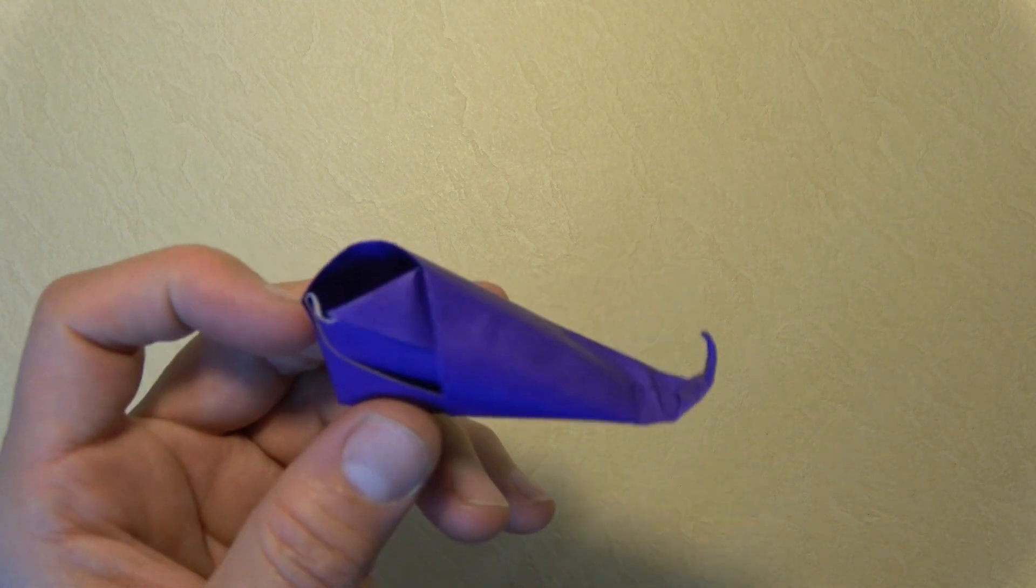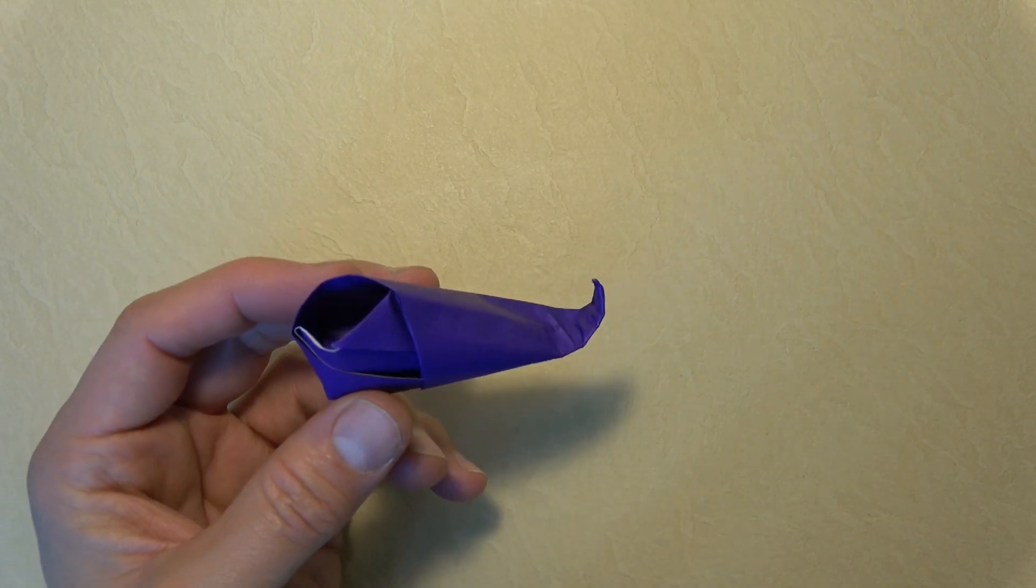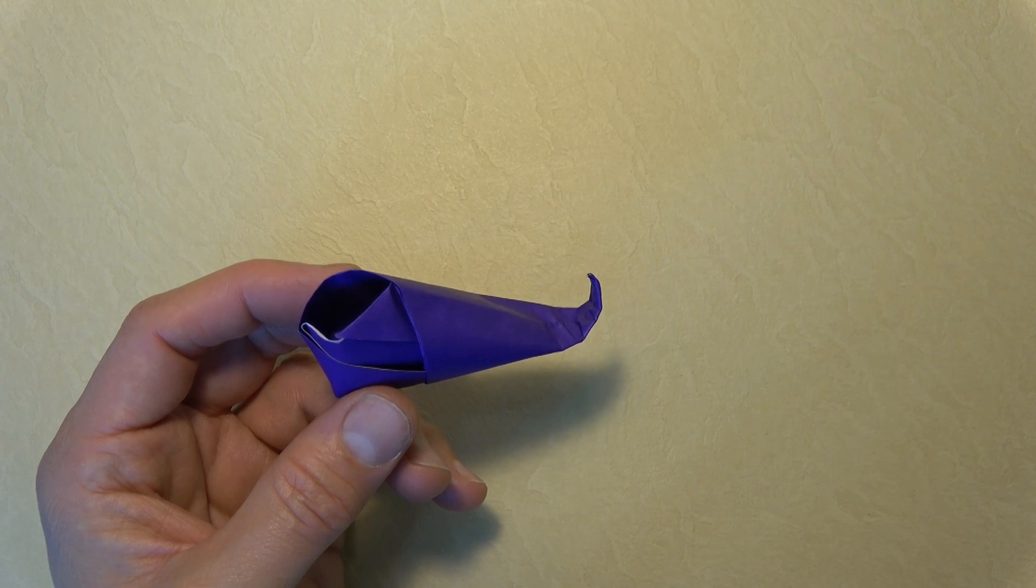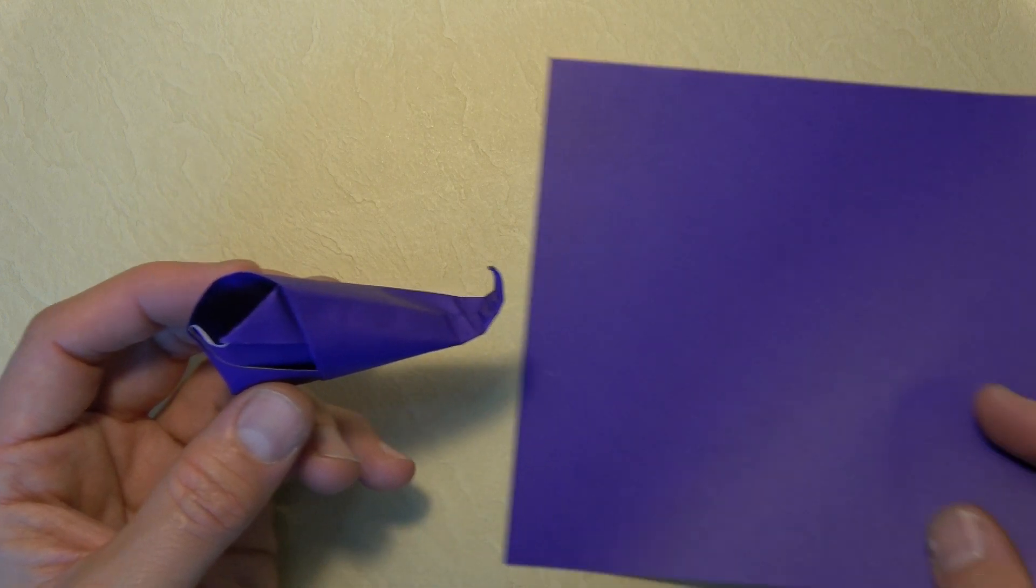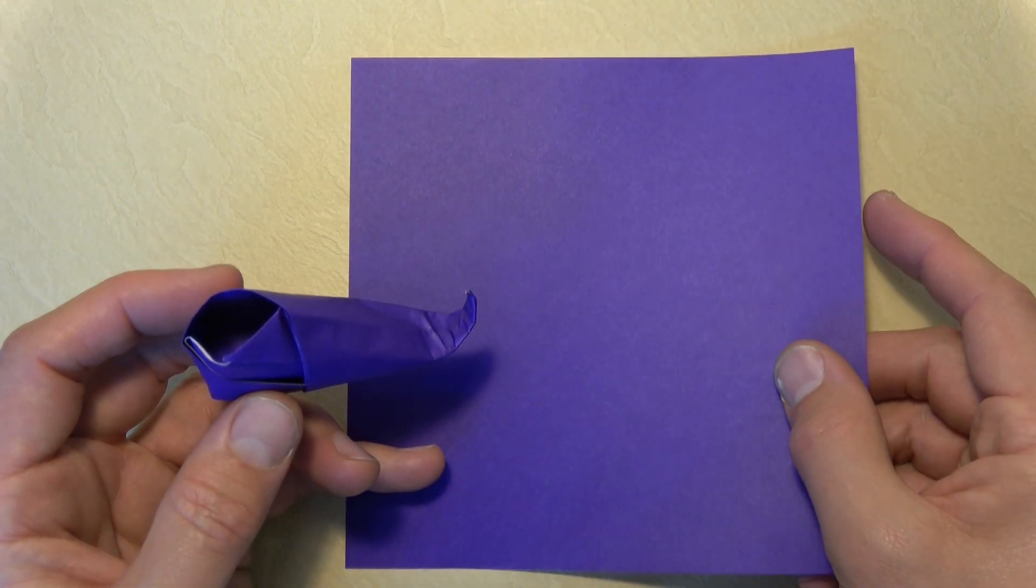All right, so for this elf shoe, you could use any size square of paper. In fact, if you use a big enough square, you might even be able to wear it. But I'm going to use an ordinary six inch square of origami paper. Let's begin white side up.